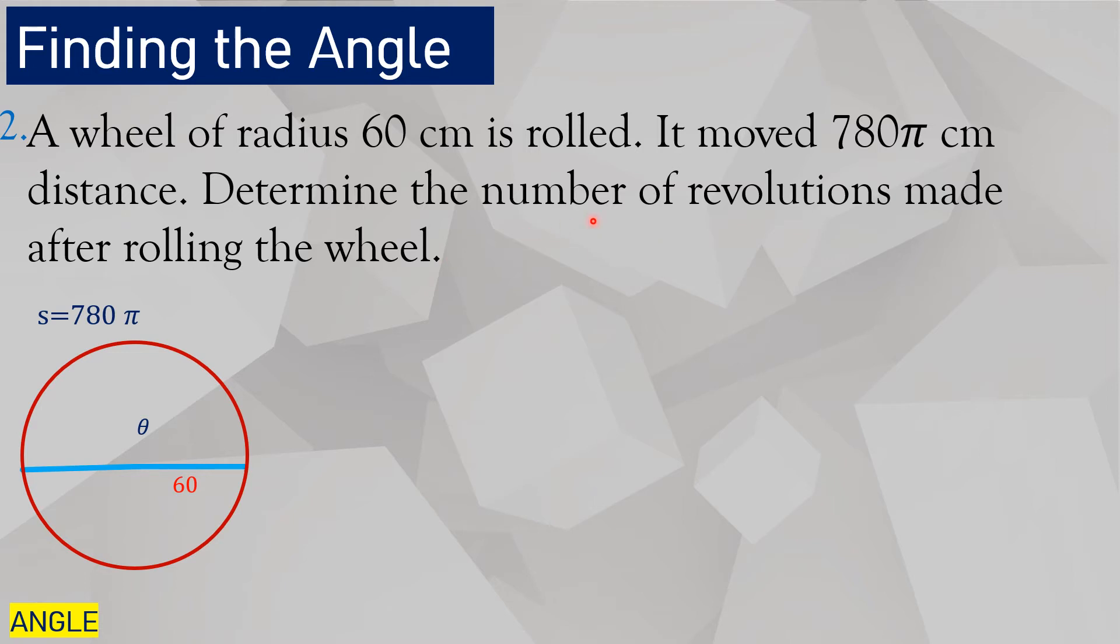The number of revolutions. Take note again, one complete revolution is 2 pi. We go back to the formula. Theta equals S over R. Now, what is 780 pi if that's the distance traveled by the wheel? Is it the radius or the arc length? That is the arc length. That is another term for arc length.